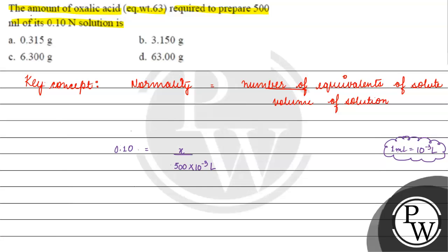Now, what does x mean? x will come out to be 0.5 into 0.1. That means 0.05. How much will it come? 0.05 equivalents.